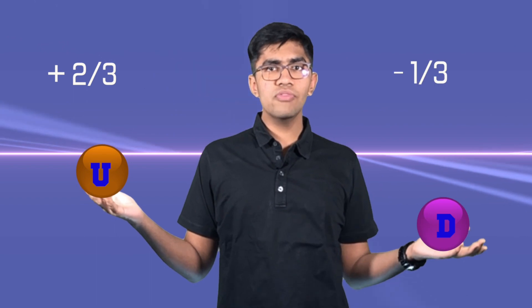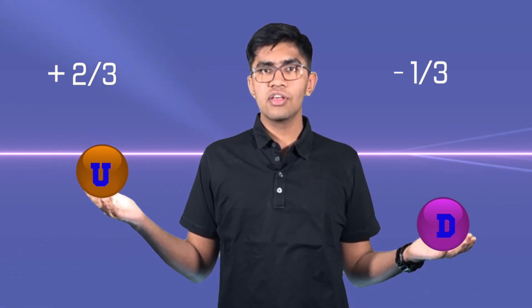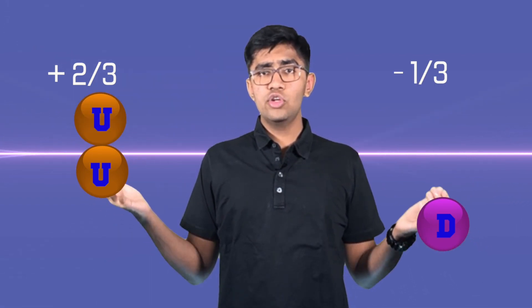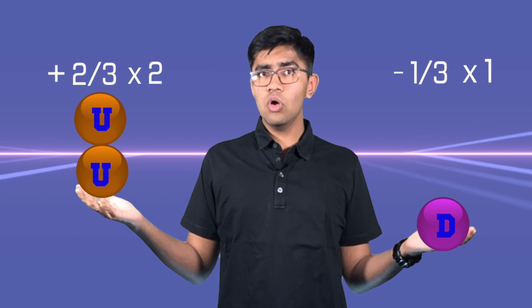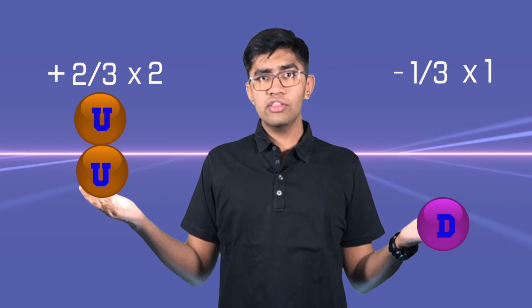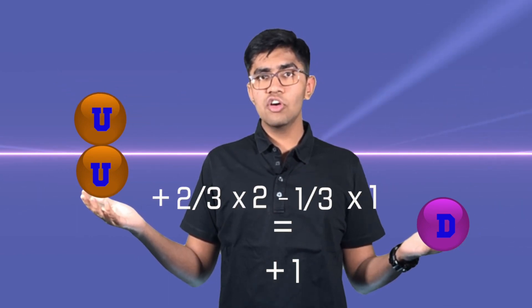The most commonly known quarks are the up quark with a charge of plus two-thirds and the down quark with a charge of negative one-third. Two up quarks and one down quark together give the proton a charge of plus one. This distribution of charge explains the Stanford experiment's results, where the down quark of the proton repels the electron.